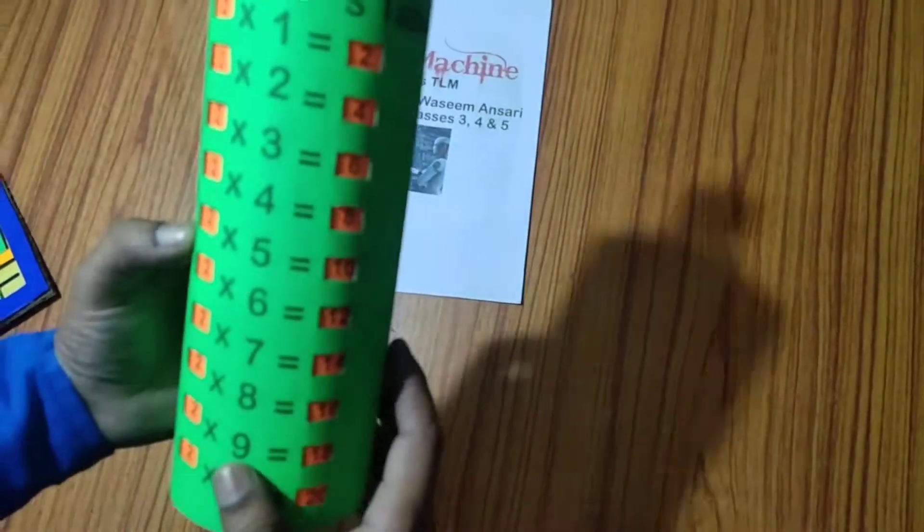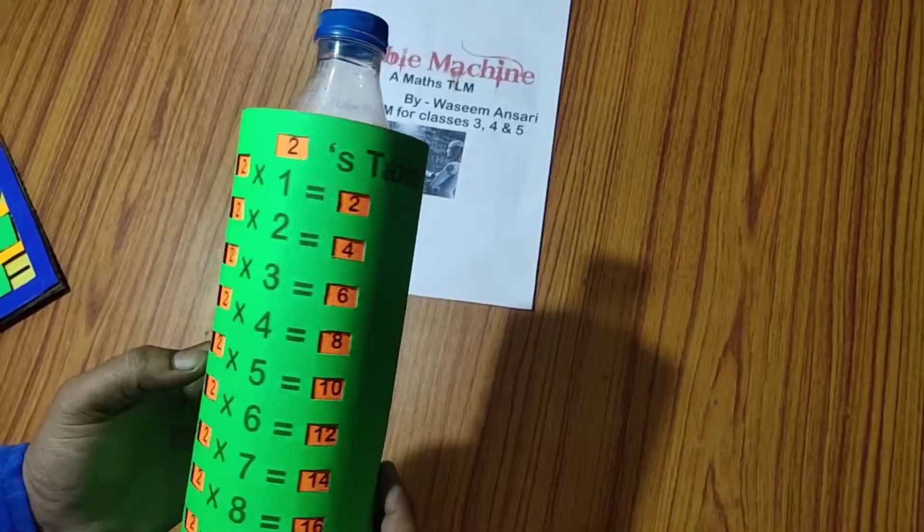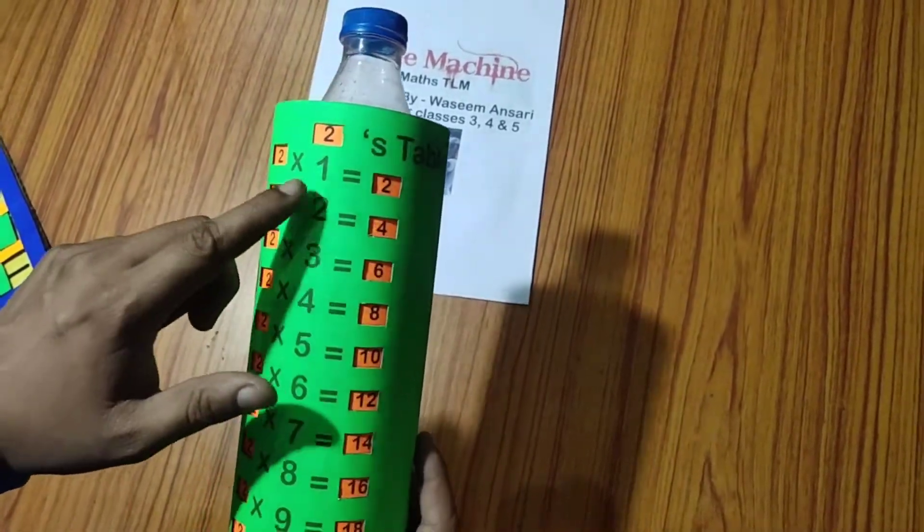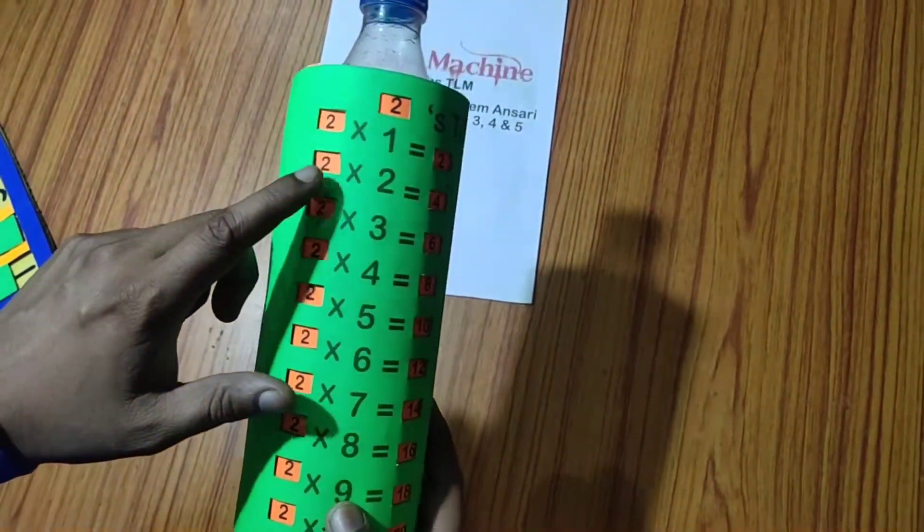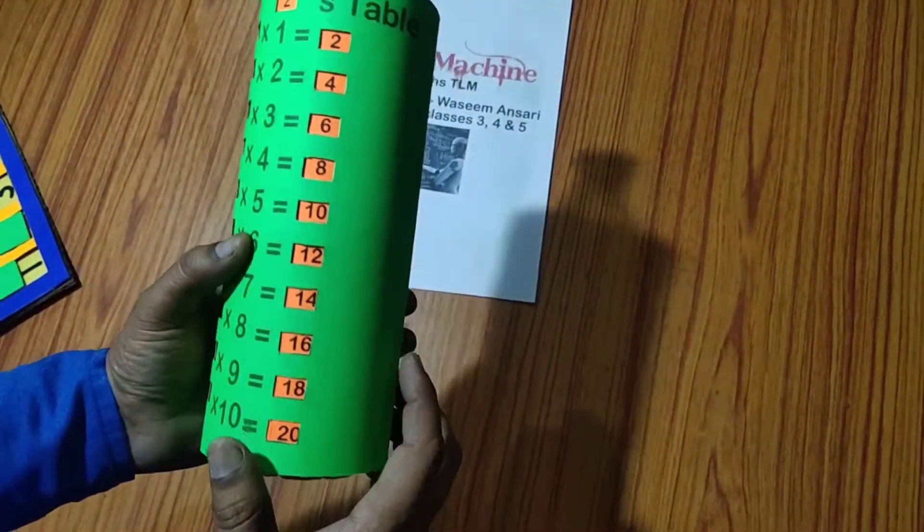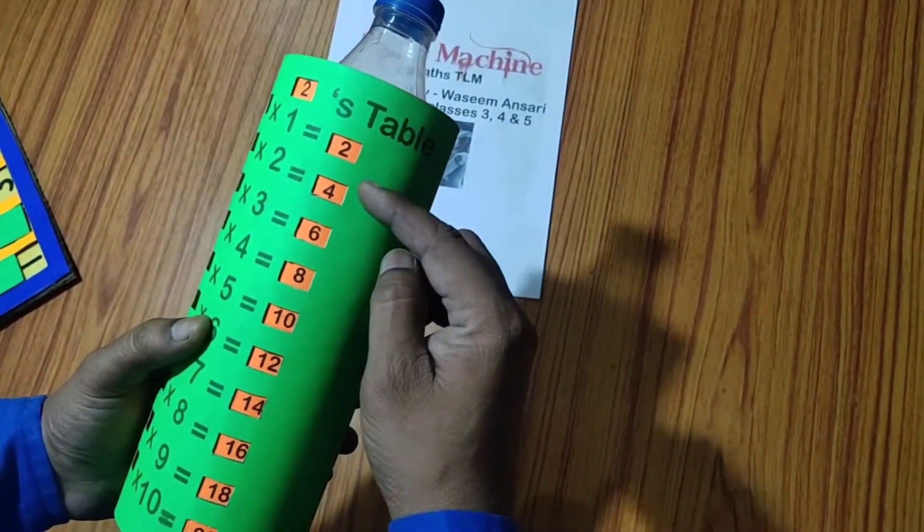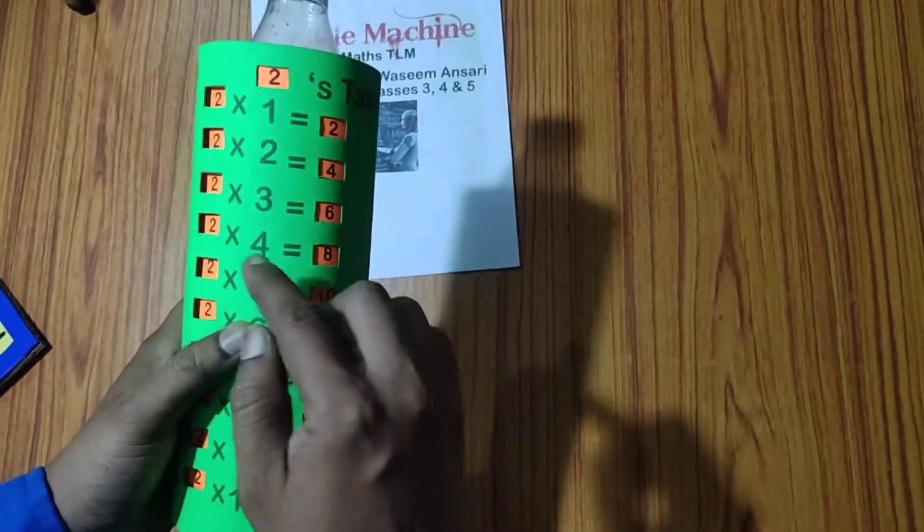The very first table is table of 2. It is 2's table. 2, 1 jar, 2. 2, 2 jar, 4. You can see all the numbers table respective to the numbers.